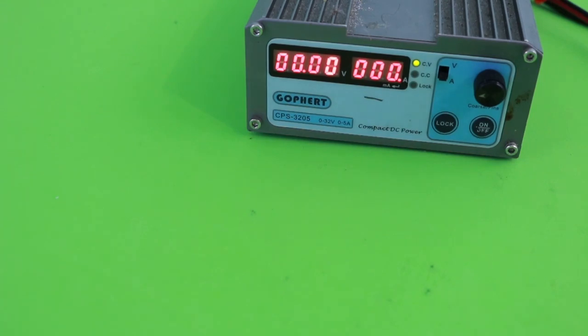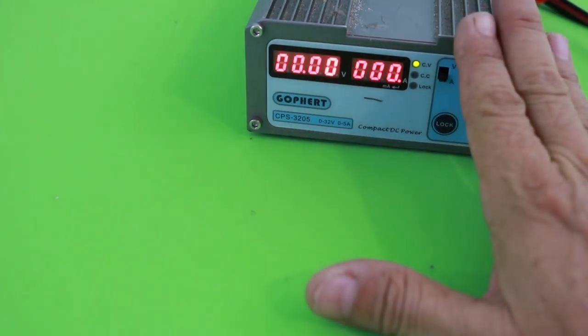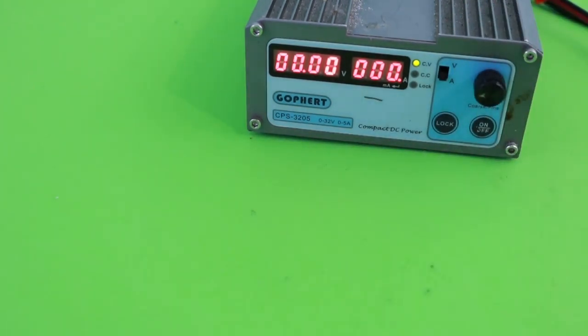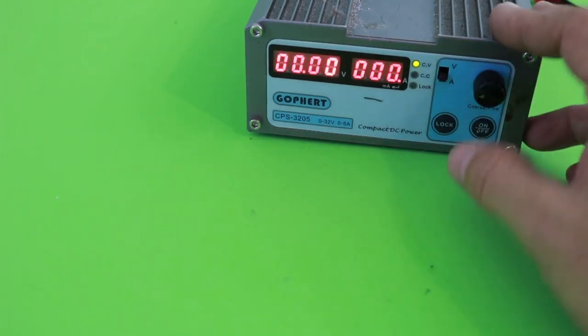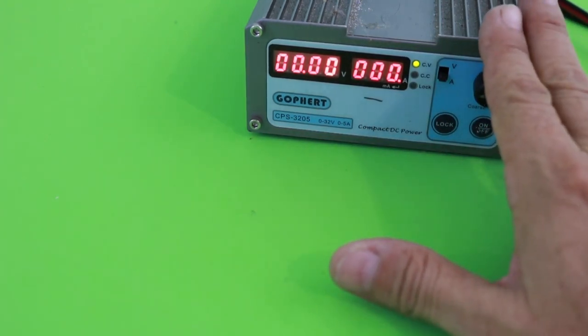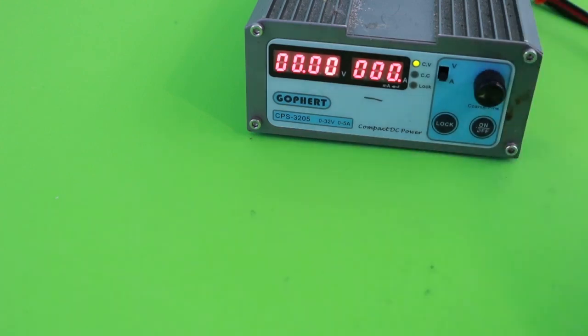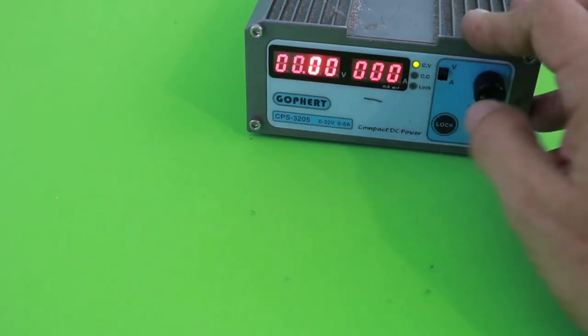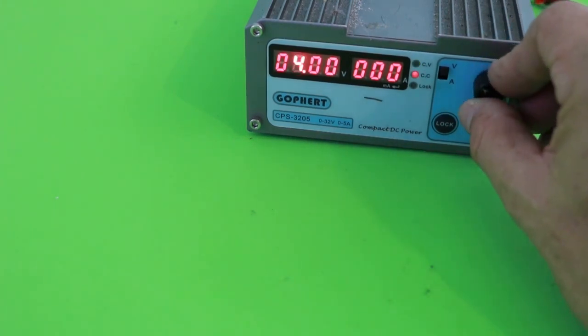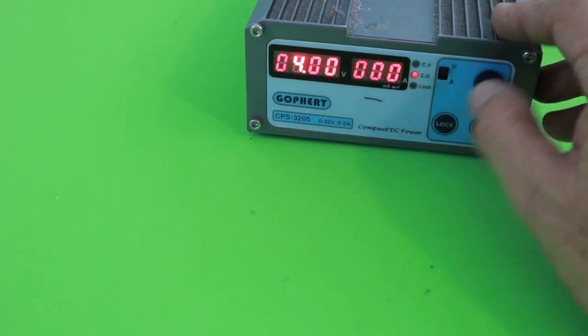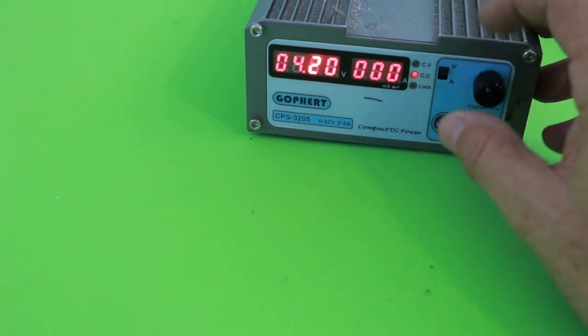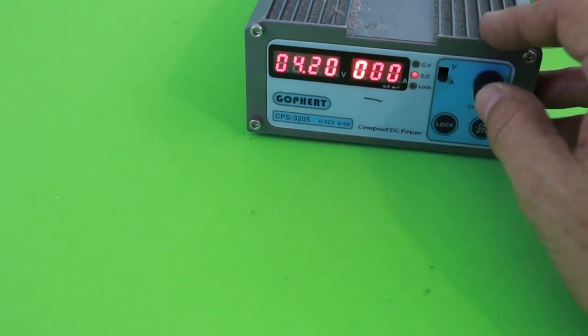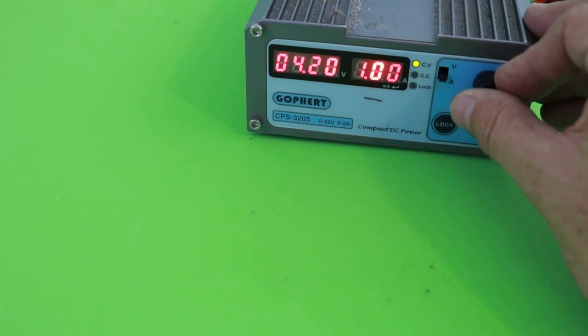It may seem complicated to charge the battery in this way but actually using our power supply it is almost automatic. Most modern power supplies, even cheap ones like mine, let you select both the voltage and the current. In our case we will select 4.2 volts and 1.5 amps.